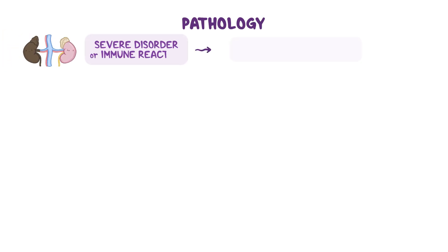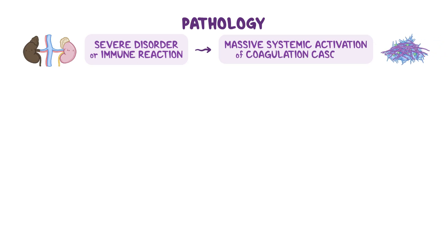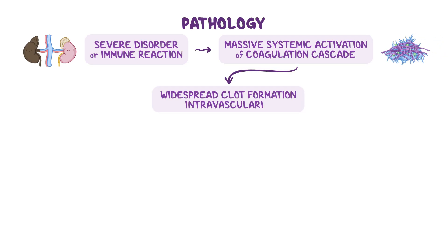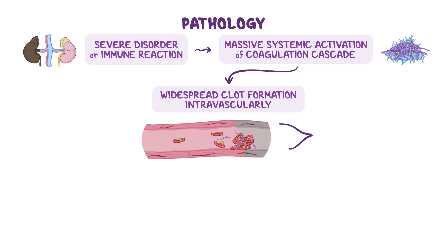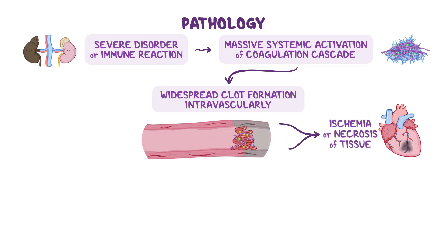The pathology of DIC develops when a severe disorder or immune reaction triggers massive systemic activation of the coagulation cascade, resulting in widespread clot formation intravascularly — hence the name disseminated intravascular coagulation. These clots can then block small and mid-sized vessels, causing ischemia or necrosis of the involved tissue.